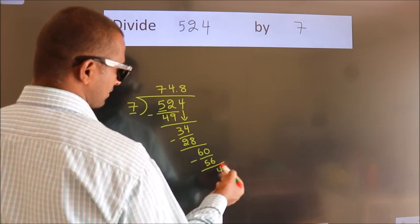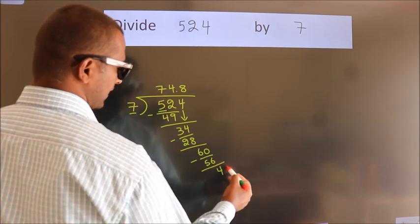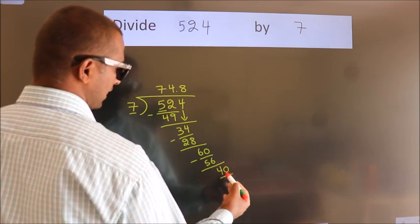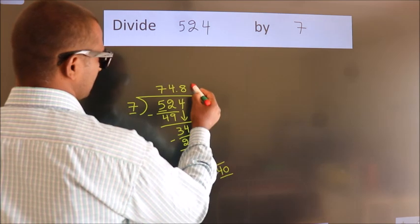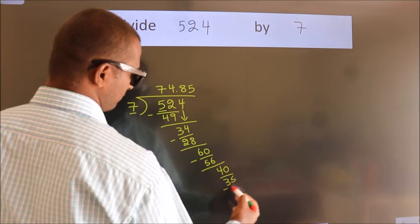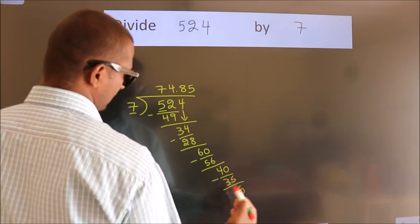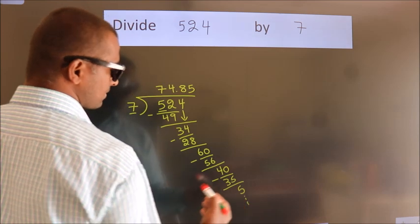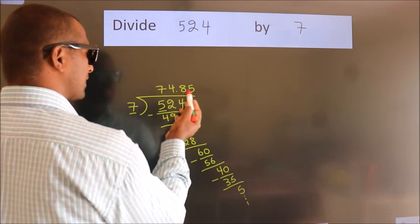After this, we already have the decimal, so directly take 0. So, 40. A number close to 40 in the 7 table is 7 fives, 35. Now we subtract and get 5. And the division continues. It is enough if we do up to 2 decimal places.